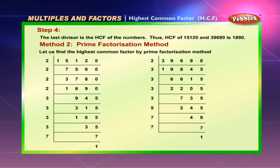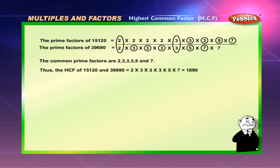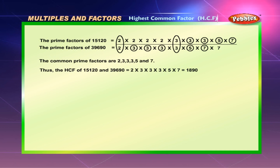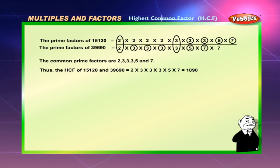Method 2 — Prime factorization method: prime factors of 15,120 = 2 × 2 × 2 × 2 × 3 × 3 × 3 × 5 × 7; prime factors of 39,690 = 2 × 3 × 3 × 3 × 3 × 5 × 7. The common prime factors are 2 × 3 × 3 × 3 × 5 × 7. Thus the HCF of 15,120 and 39,690 = 2 × 3 × 3 × 3 × 5 × 7 = 1,890.